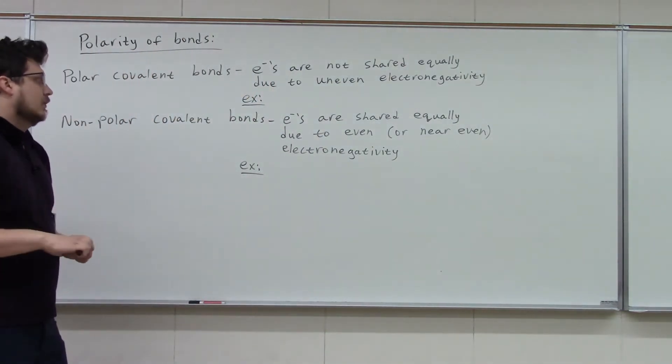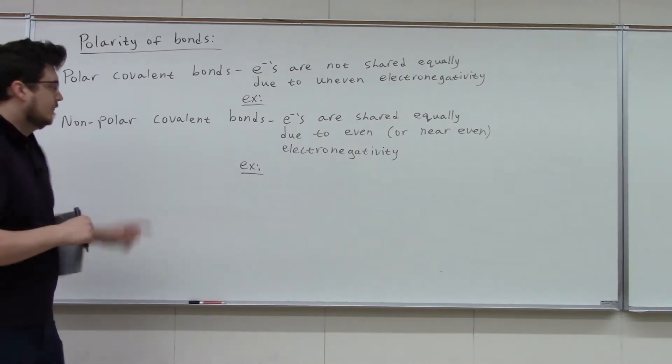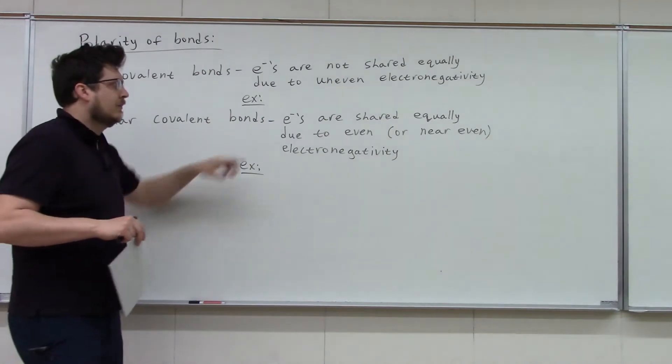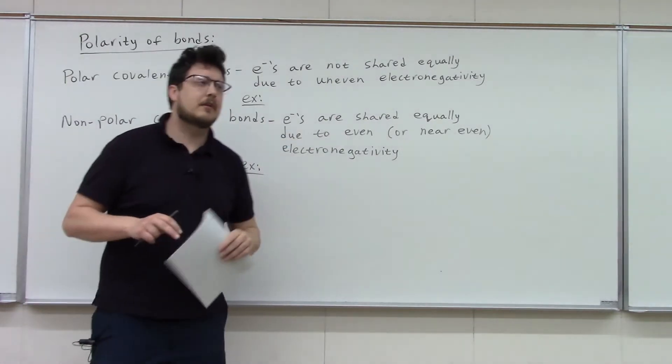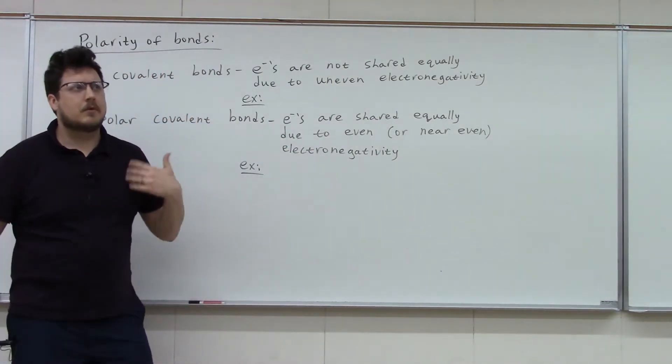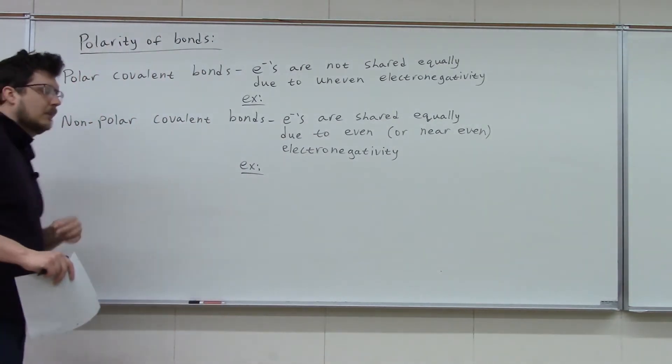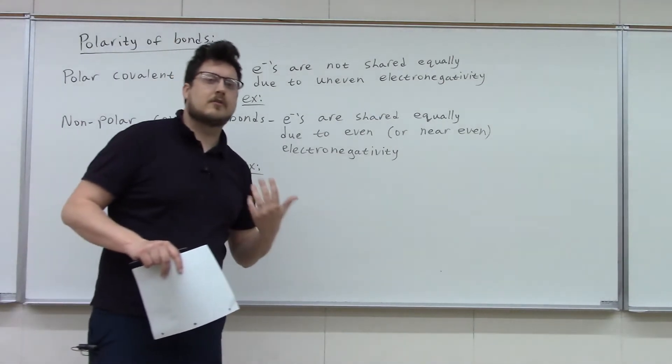And then if you don't have polarity, well, what do we call that? Nonpolar. So a nonpolar covalent bond are when the electrons are shared equally. So typically this will be between two of the same element, like carbon and carbon, or nitrogen and nitrogen, oxygen and oxygen. So both elements of the bond are the same.